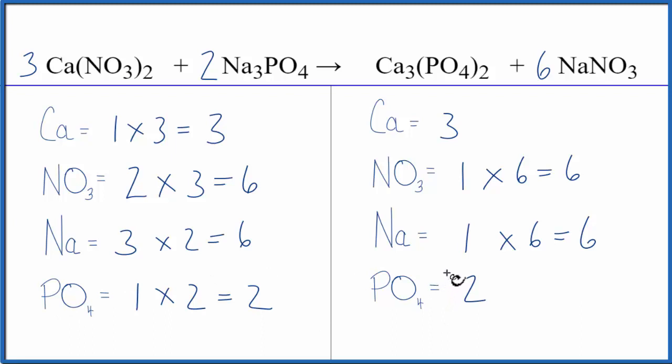This equation is balanced. So when we have polyatomic ions like nitrate NO3 here and here, we can just count that as one item. It makes it a lot easier, a lot more accurate, and you get the same answer.